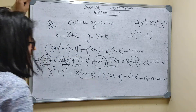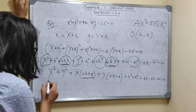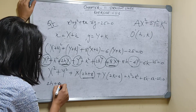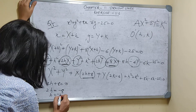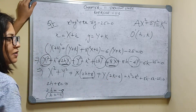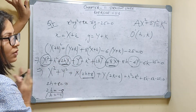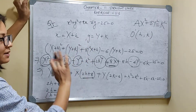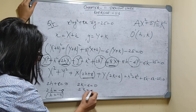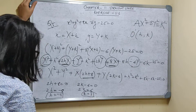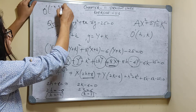Setting the X coefficient to zero: 2H + 8 = 0, so H = -4. Setting the Y coefficient to zero: 2K - 6 = 0, so K = 3. Therefore we are shifting the origin to O' = (-4, 3).